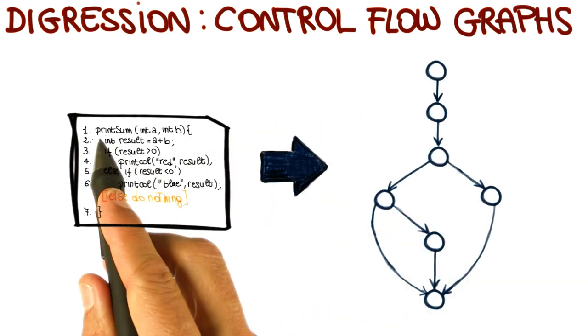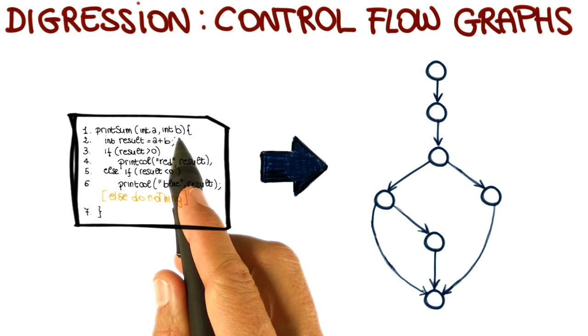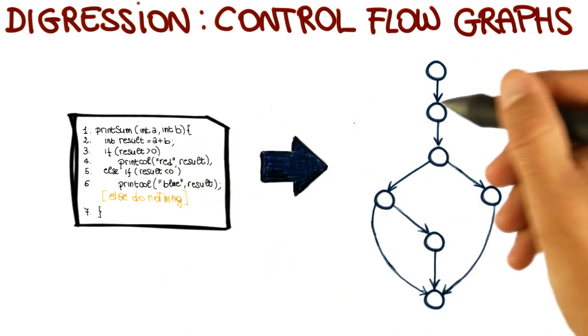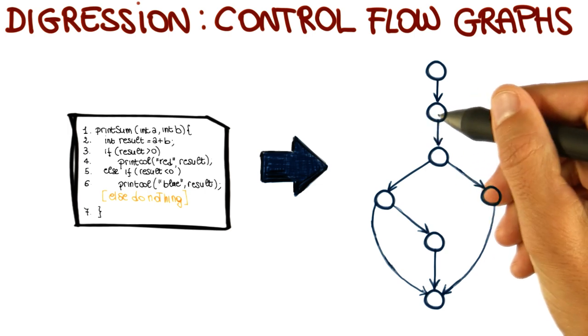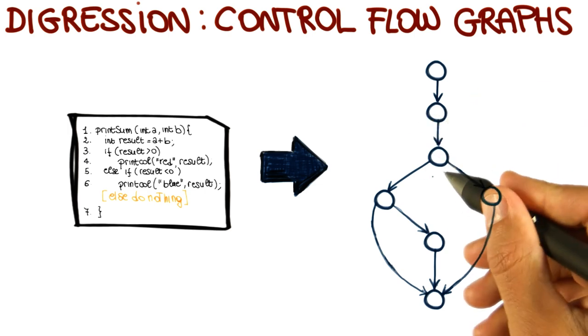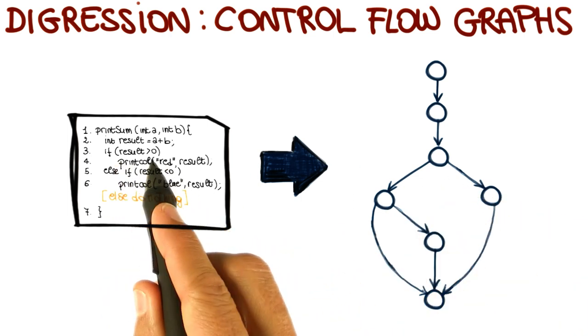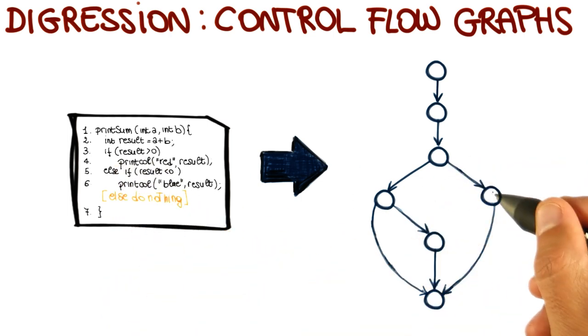So here is an example of a control flow graph for this code. There is the entry point of the code, right here, then our statement in which we assign the result of a plus b to variable result, our if statement. And as you can see, the if statement has got two branches coming out of it, because based on the outcome of this predicate, we will go one way or the other.